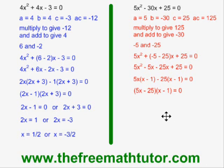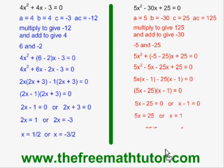I end up with these as my factors. 5x − 25 can be further factored, but I don't have to do this. I just have to make each binomial equal to 0, doing the split, and then solve for x in each case. I get x = 5 or x = 1. So the roots of this quadratic equation are 5 and 1.